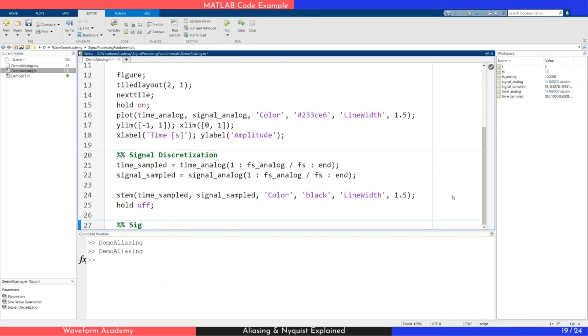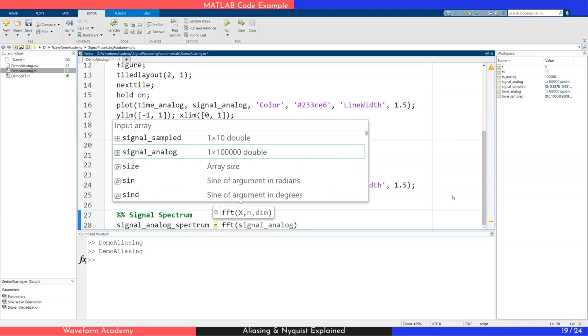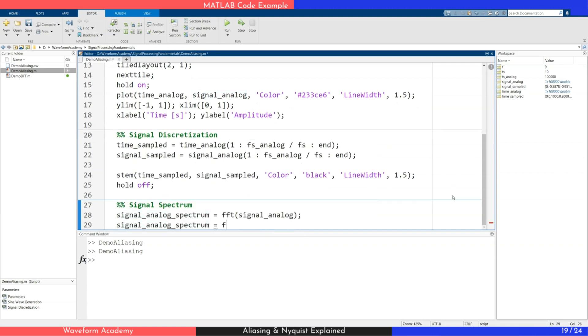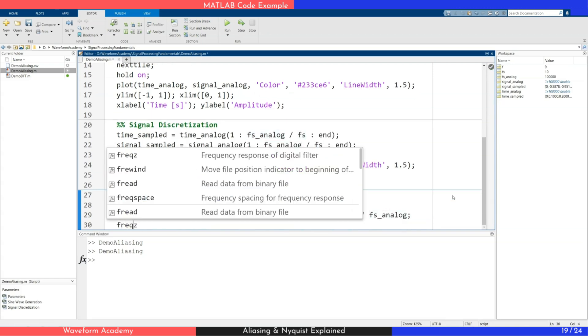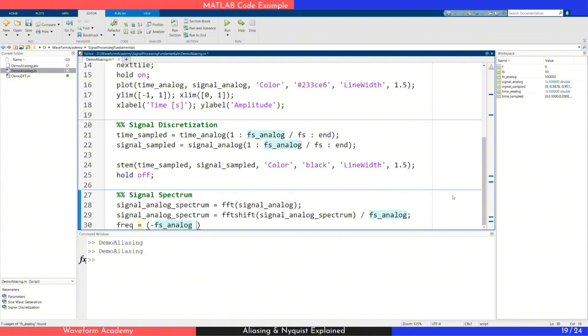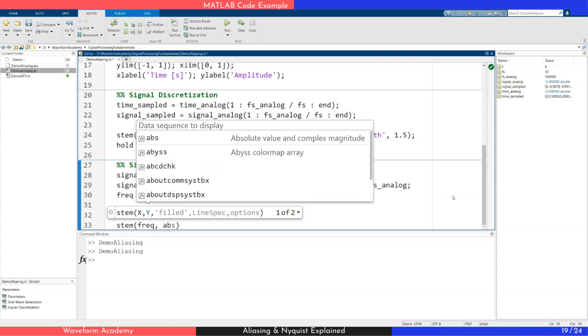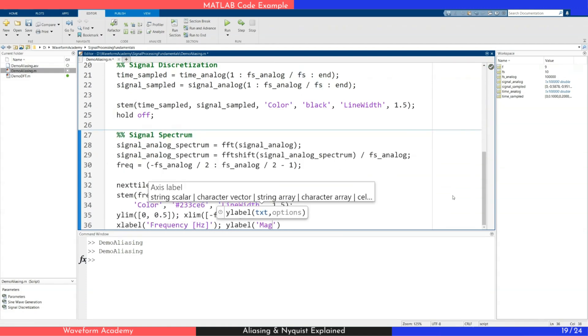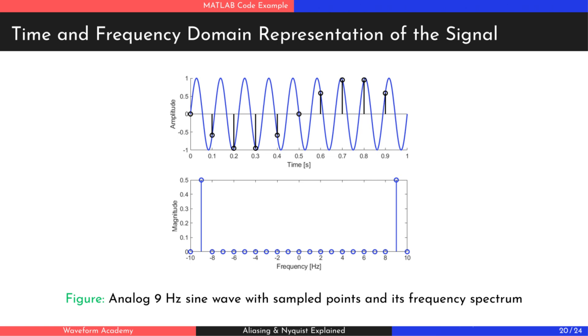Next, let's compute the spectrum of the analog signal using MATLAB's FFT function. If you're unfamiliar with how it works, check out our video on the discrete Fourier transform for a deeper explanation. We also calculate the frequency indices and plot the spectrum. As you can see, the graph shows a clear peak at 9 Hz, which corresponds to the signal frequency.